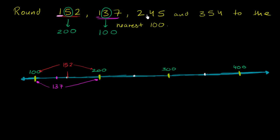Let's do the same thing with 245. If you haven't paused and tried it yourself, I want to emphasize — that'll make it really valuable for you to try it on your own. So let's plot where 245 is. This is 250, so 245 might be right around here. Applying the rule: if we're rounding to the nearest 100, we look at the tens place. We can ignore the ones place. If the tens digit is greater than or equal to 5, we round up; if it's less than 5, we round down. So here we're clearly going to round down, and we round down to 200.